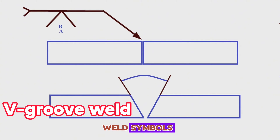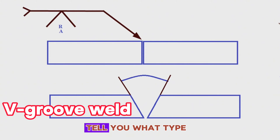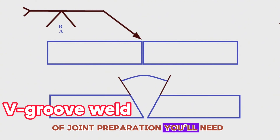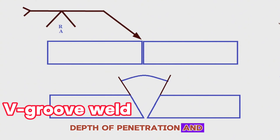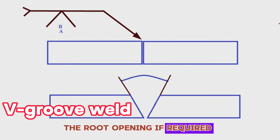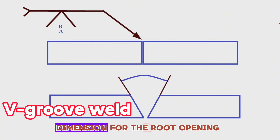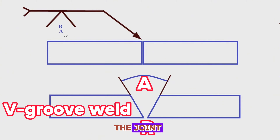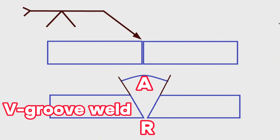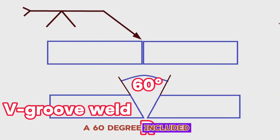How to read groove weld symbols. The groove weld symbols tell you the type of joint preparation needed. They also tell you the angle of the joint preparation, depth of penetration, and the root opening if required. Here R is the dimension for the root opening and A is the groove angle. The groove angle is the included angle of the joint, not the angle you cut the bevel. For example, a 60-degree included angle means two 30-degree bevels.